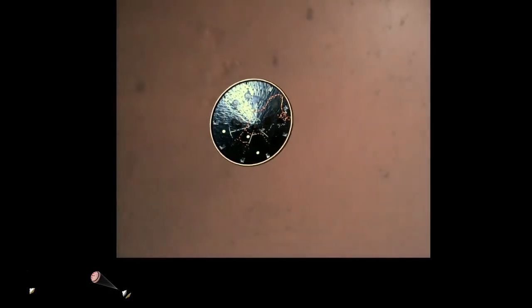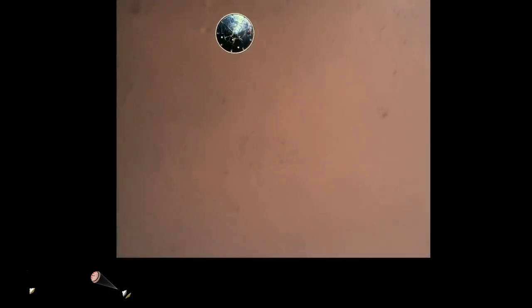Heat shield separated. Perseverance has now slowed to subsonic speeds, and the heat shield has been separated. This allows both the radar and the cameras to get their first look at the surface. Current velocity is 145 meters per second at an altitude of about 9.5 kilometers above the surface.